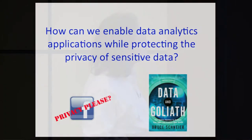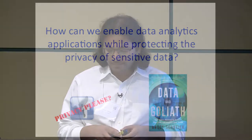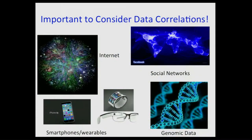As we've seen in many previous talks, one of the key questions in this domain is how do we balance the utility of the data with the privacy protections that users desire. The key slide in this talk is that as we think about this question, it's important to think about correlations in data.